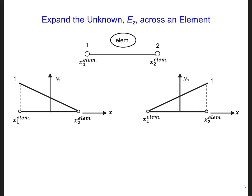Since there are two nodes of the element, we can write an expression for Ez within any element of the grid by multiplying the value of Ez. So Ez at any spatial position x within the element is Ez at node 1 for that element.